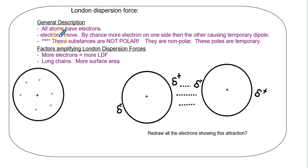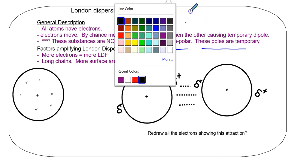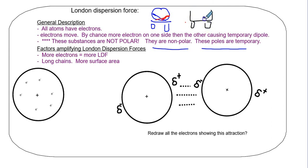London dispersion forces: all atoms have electrons. Electrons move by chance, more electrons on one side than the other causing a temporary dipole. These substances are not polar. These are just temporary poles. Sometimes I like to think of it as a milk truck. From behind it's a circle with wheels. The milk can slosh one way or slosh back this way. But if you have a gravel truck, the gravel doesn't really sway back and forth all that much, unlike milk does.